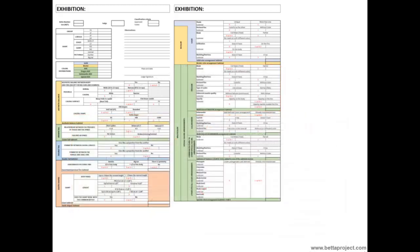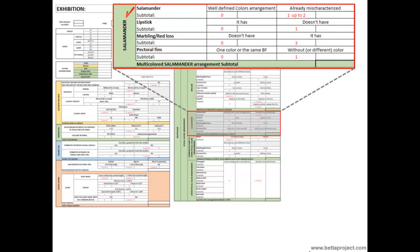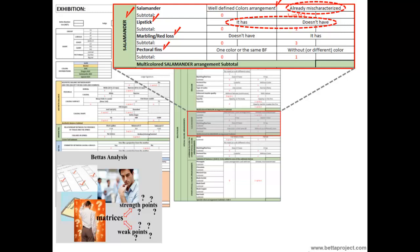The next special multicolored arrangement to be evaluated is the so-called salamander. In the same way as other multicolored types analyzed, the presence of marbling and/or red loss, as well as the color of the pectoral fins matching the pattern shown in the other fins, should be observed by judges. The salamander color arrangement should be well characterized — that is, the color distributions on the body and fins are in accordance with the salamander patterns or are already starting to deteriorate. However, the salamander class will be evaluated separately in a specific group due to the presence of color on the lips of the betta following the border color of the fins — the so-called lipstick — whether it presents or not. I advise you to watch 'Betta's Analysis: Classes and Patterns for Judgments in Specialized Exhibitions' for further clarification.